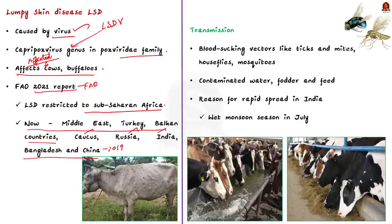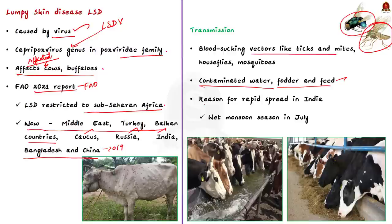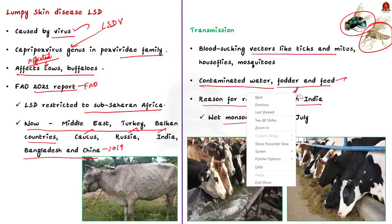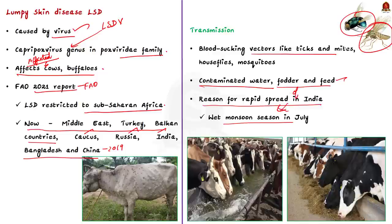LSDV spreads through blood-sucking vectors like ticks and mites, houseflies, and mosquitoes. It also spreads through contaminated water, fodder, and feed. Mosquito and housefly infections remain at their peak during the monsoon season, and scientists and government officers say that wet July conditions may be the reason for the rapid spread of the infection in Gujarat this year.